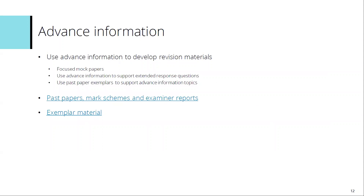You can use advanced information to develop revision materials. That could include focused mock papers — using the advanced information to just focus on the topics that are detailed in there. You can use advanced information to support extended response questions and to use past paper exemplars to support the advanced information topics. On the slides, there are links through to past papers and mark schemes and examiner reports, as well as links through to further exemplar material for the specifications.